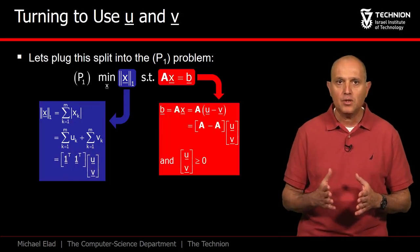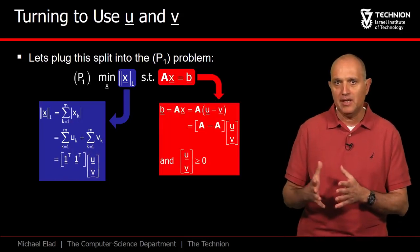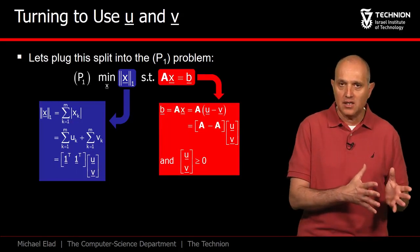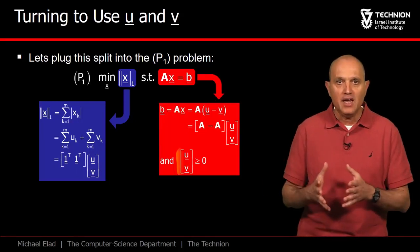Second, the linear constraint Ax equals b can be written differently to reflect the fact that x equals u minus v, again leading to a linear form.